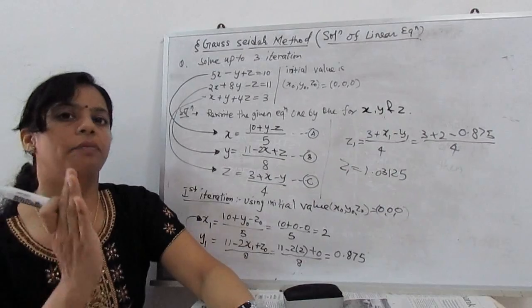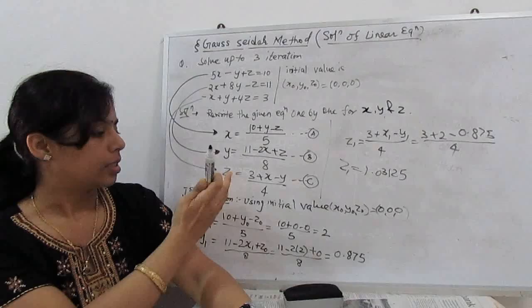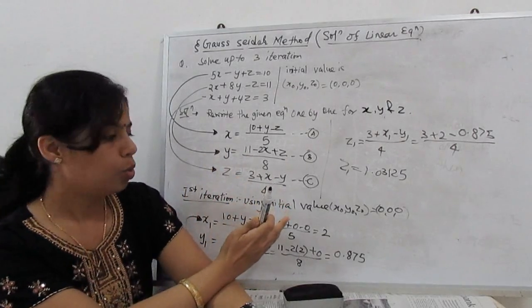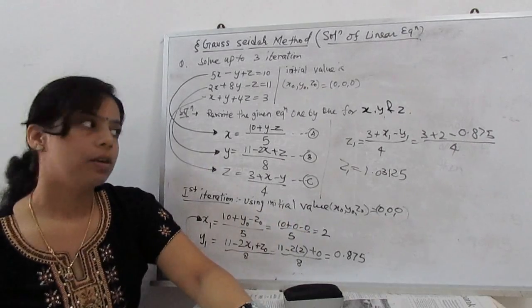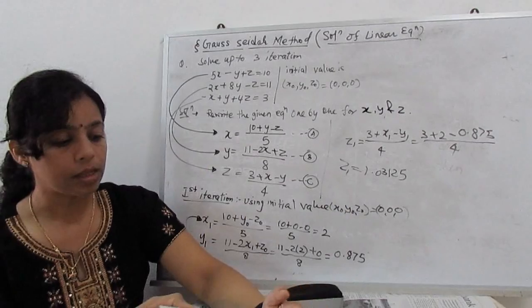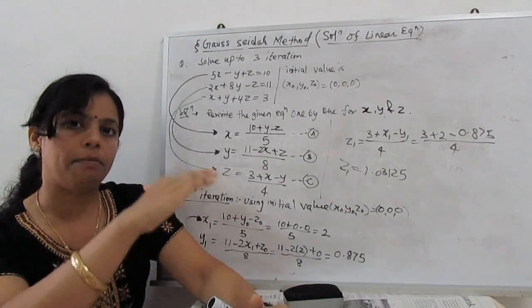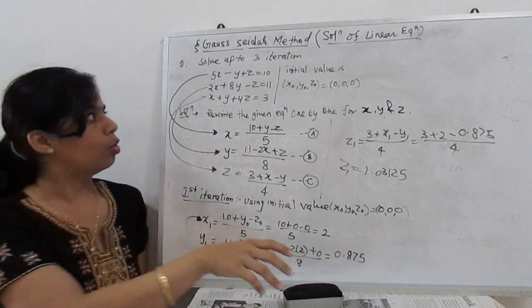That is my first iteration value. X1, Y1, Z1 is given by X1 is 2, Y1 is 0.875, and Z1 is 1.03125. Now, with same manner, we go for the second iteration and the third iteration.